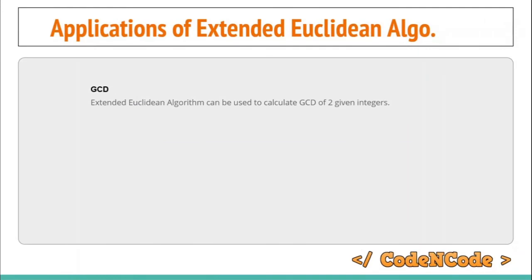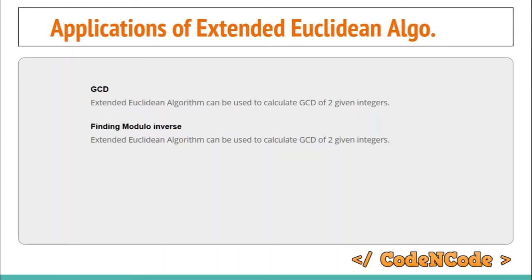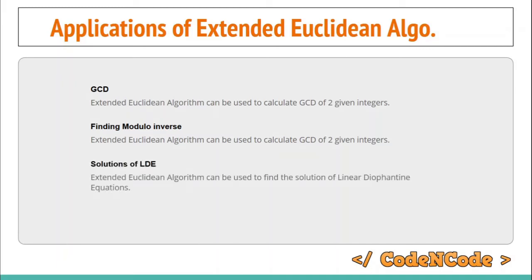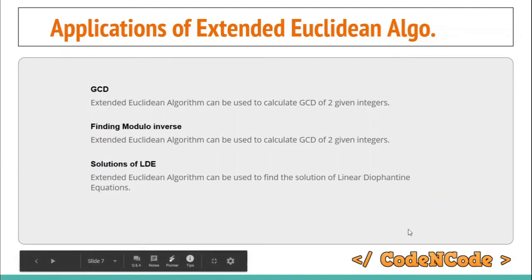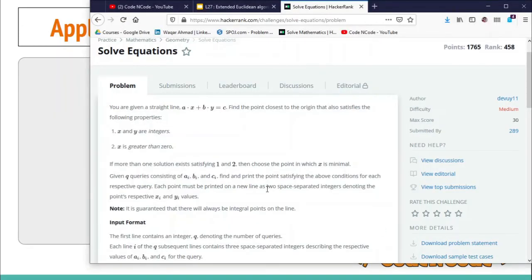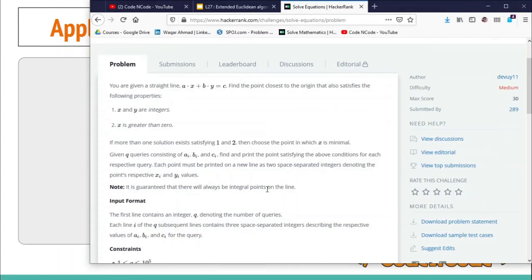Now, what are the applications of the Extended Euclidean Algorithm in competitive programming? First, since it is the extended version of the Euclidean algorithm, you can use it to calculate GCD, but if your end goal is only to find the GCD, using the simple Euclidean algorithm makes more sense. Second, finding the modular inverse — the Extended Euclidean Algorithm can be used to calculate the modular inverse of two integers, which we'll see in upcoming lectures. Third, one of the most important uses is finding the solution of LDE — Linear Diophantine Equations, which are equations of the form ax + by = c.